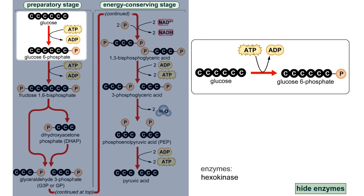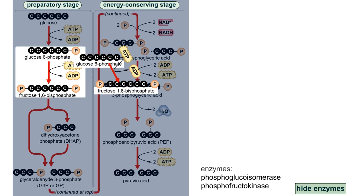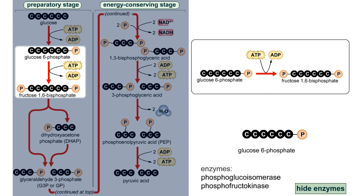While glycolysis results in a net gain of available energy for the cell in the form of ATP and NADH, energy must first be invested to begin the process, and this can only occur in a living cell with ATP available to invest. In the first step, a phosphate group is transferred from ATP to glucose. In the second step, the atoms of glucose-6-phosphate are rearranged to form fructose-6-phosphate. This prepares the molecule for the third step, in which further energy is invested in the form of ATP, forming fructose-1,6-bisphosphate.